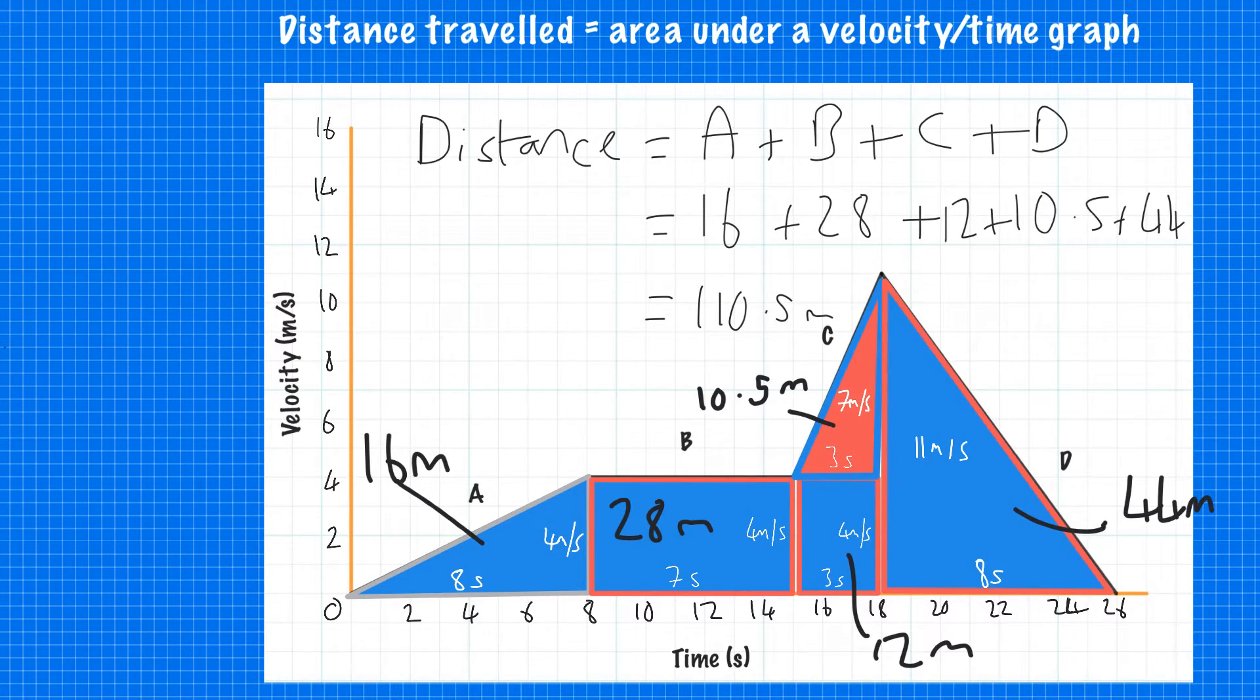If we calculate everything together, we have 16 metres from this section, 28 from this section, 12 plus 10.5 from this section, and 44 from this section. If we add them all up, we get the total distance traveled from the whole journey. You can always break down a velocity-time graph into as many sections as you like, as long as you add them all up at the end.